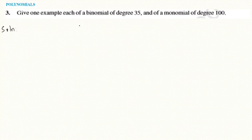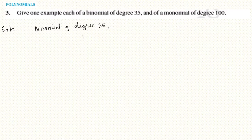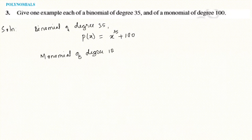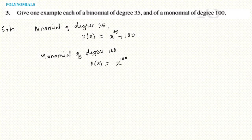Question 3: Give an example of a binomial of degree 35 and a monomial of degree 100. Binomial of degree 35: x to the power 35 plus 100. Monomial of degree 100: x to the power 100 — a single term with highest power 100.